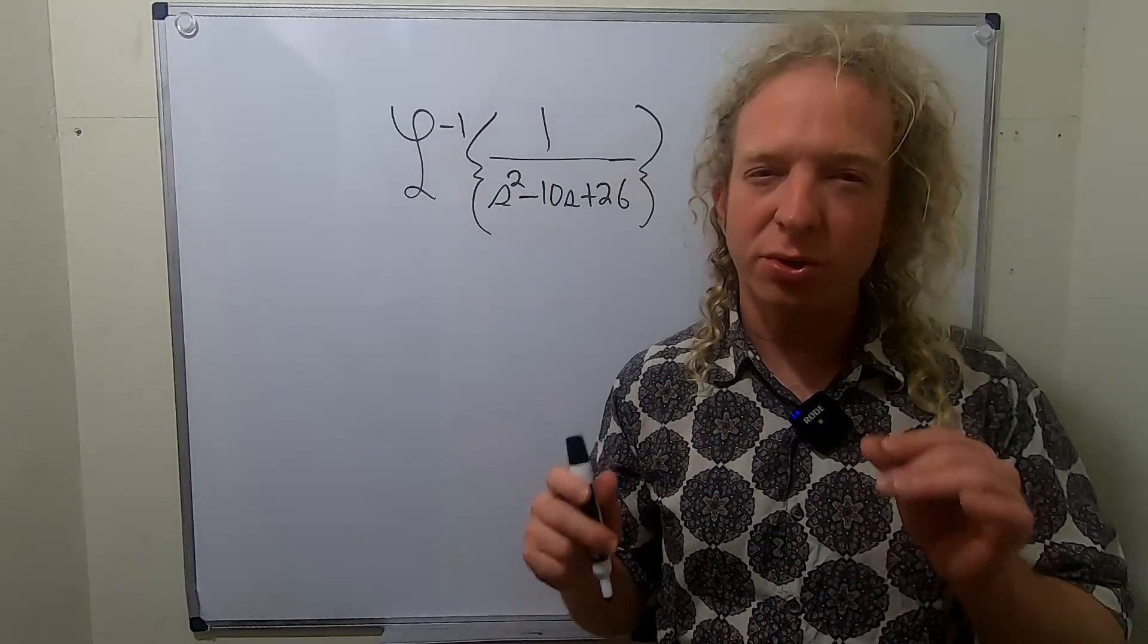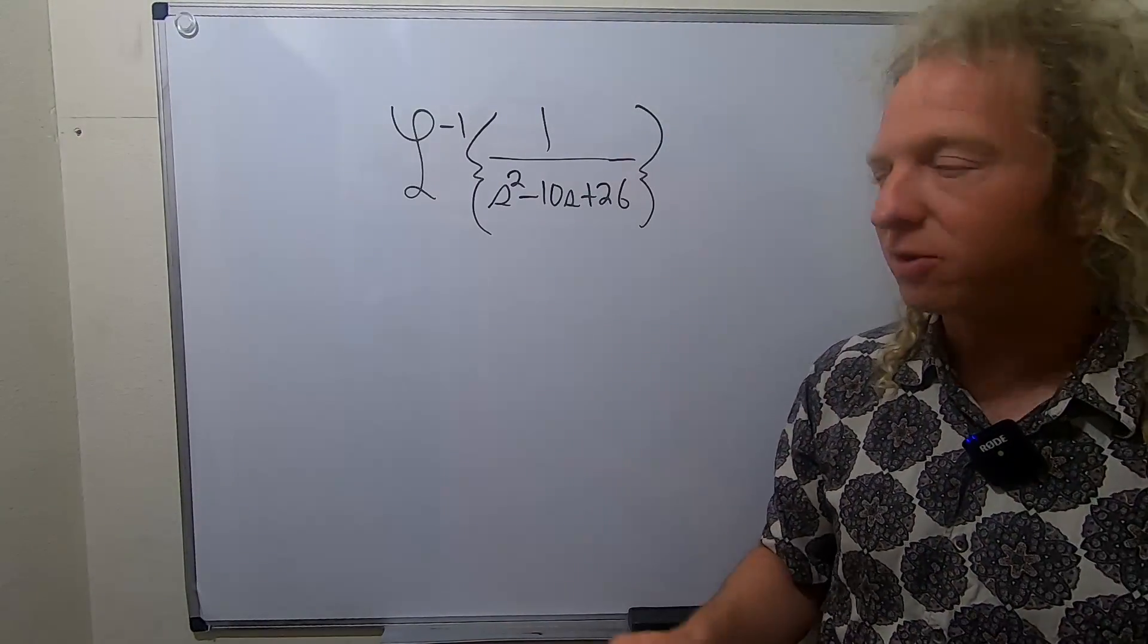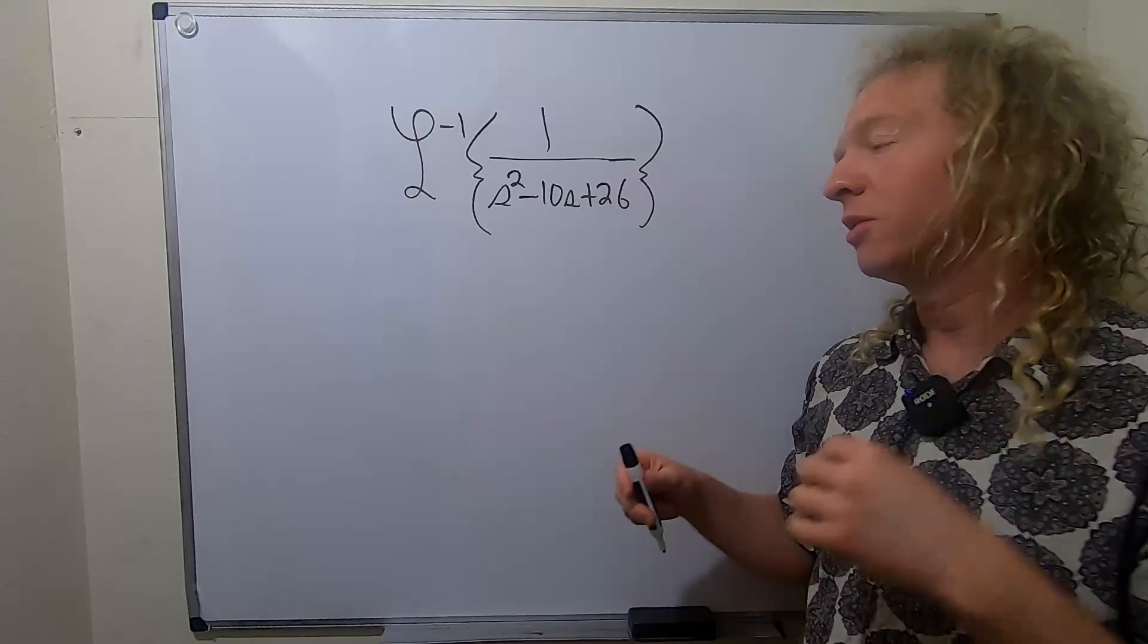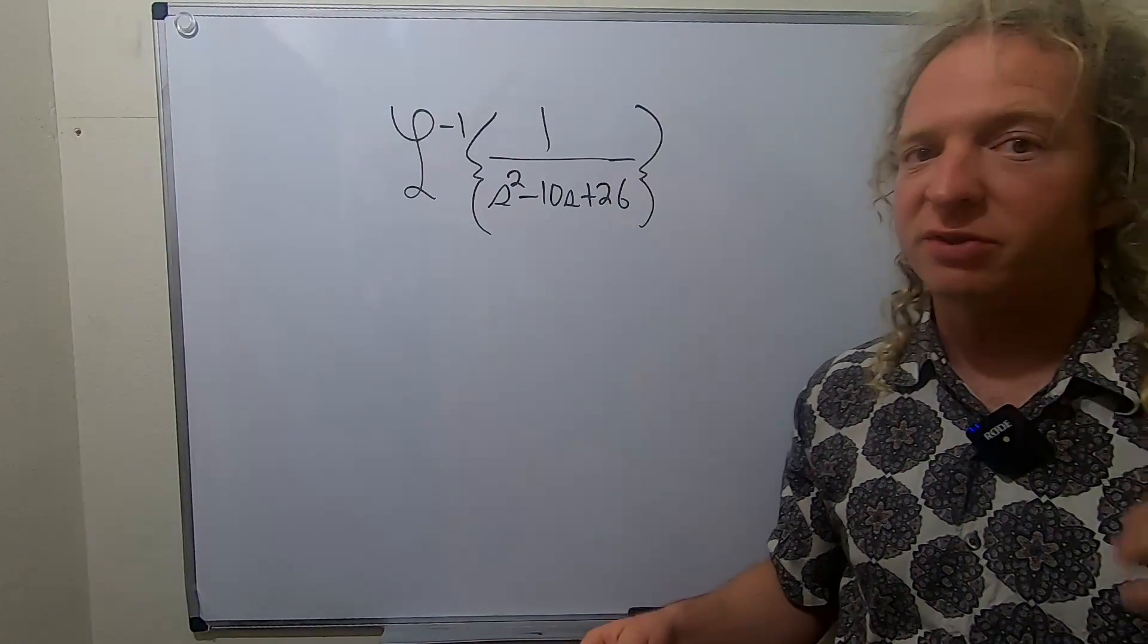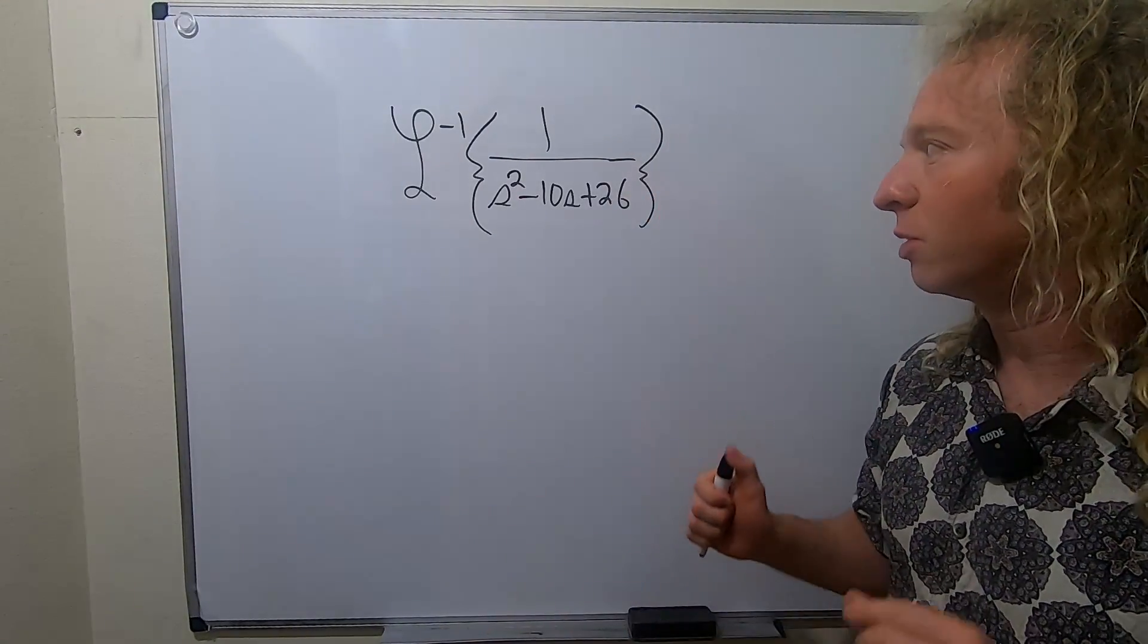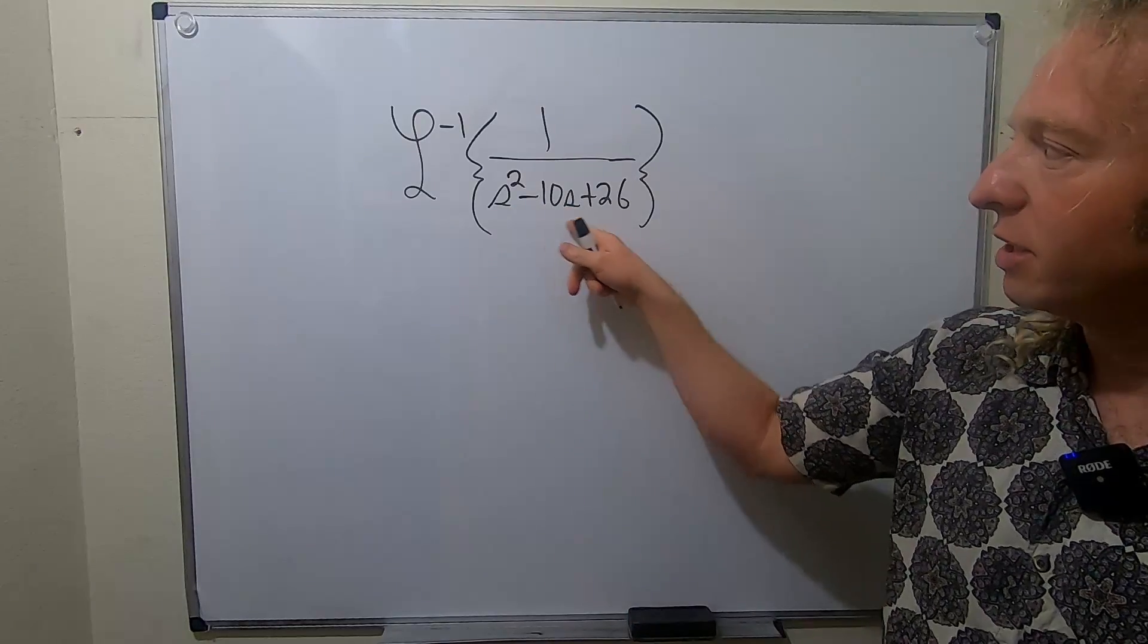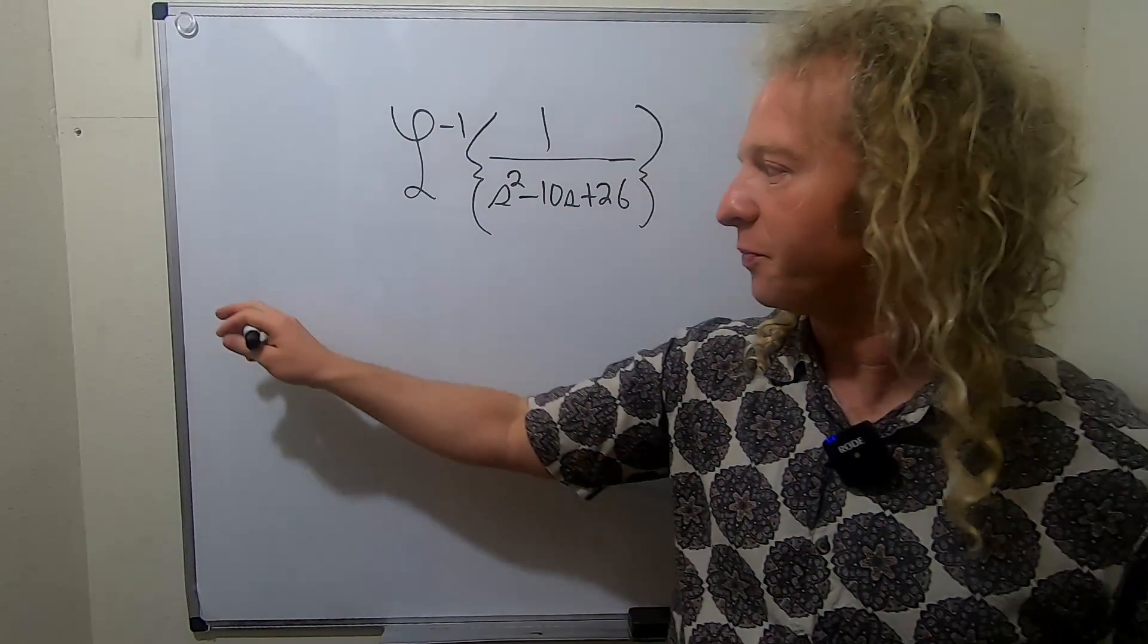But again, your first approach should always be to try to factor. Factoring is too hard, so let's try a different approach. The second approach is to complete the square. So let's go ahead and take the denominator and complete the square.